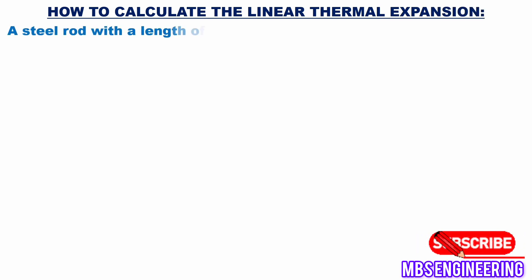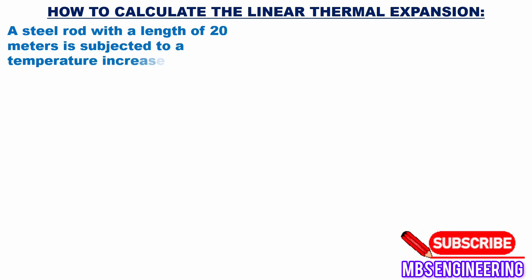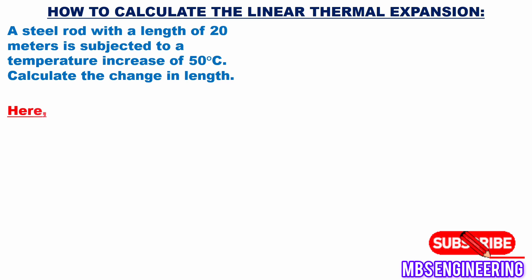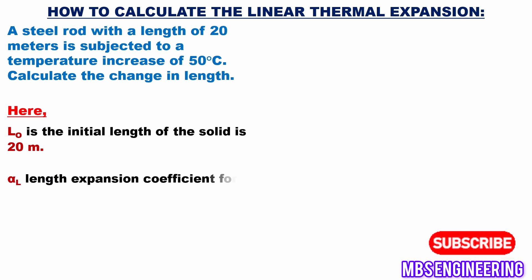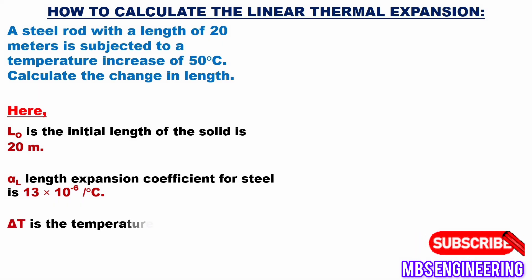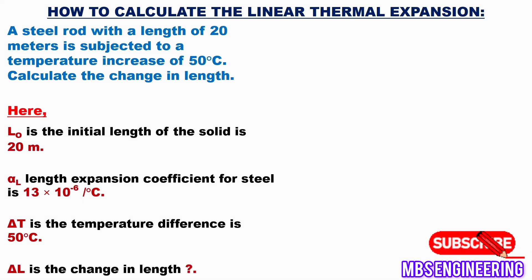A steel rod with a length of 20 meters is subjected to a temperature increase of 50 degrees Celsius. Calculate the change in length. Given: L₀ = 20 m, alpha_L (length expansion coefficient for steel) = 13 × 10⁻⁶ per degree Celsius, delta T = 50°C, and delta L is to be calculated.